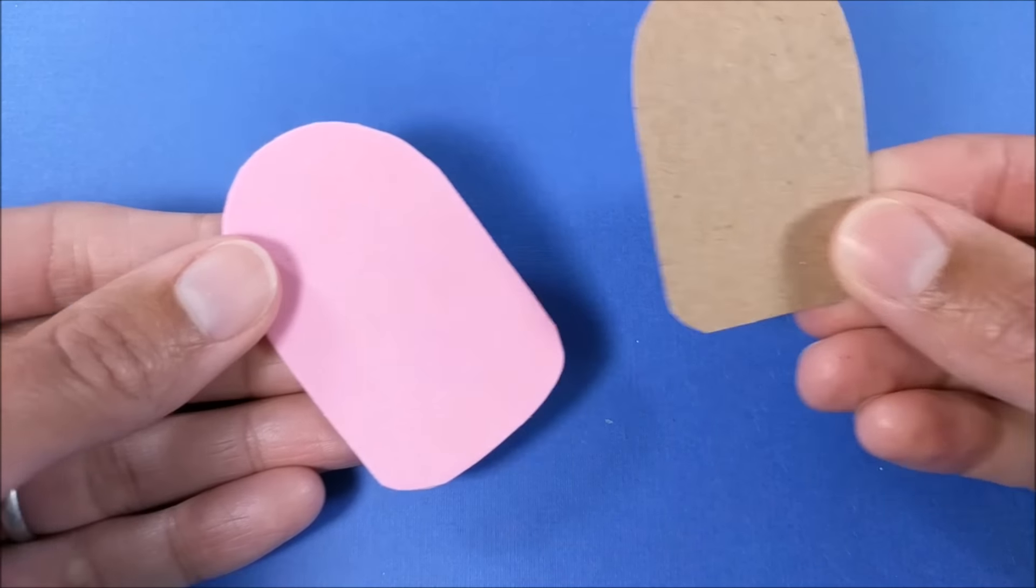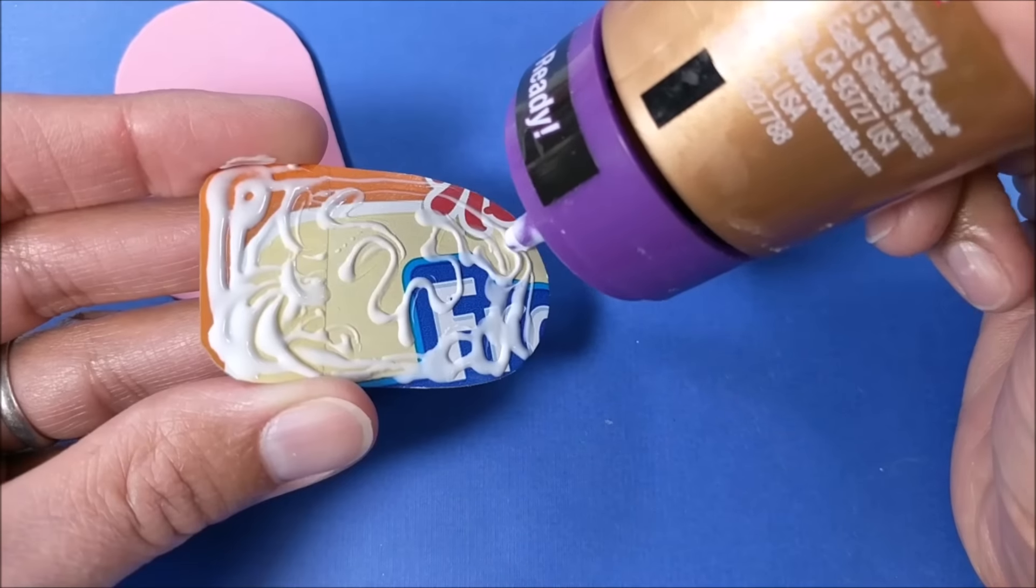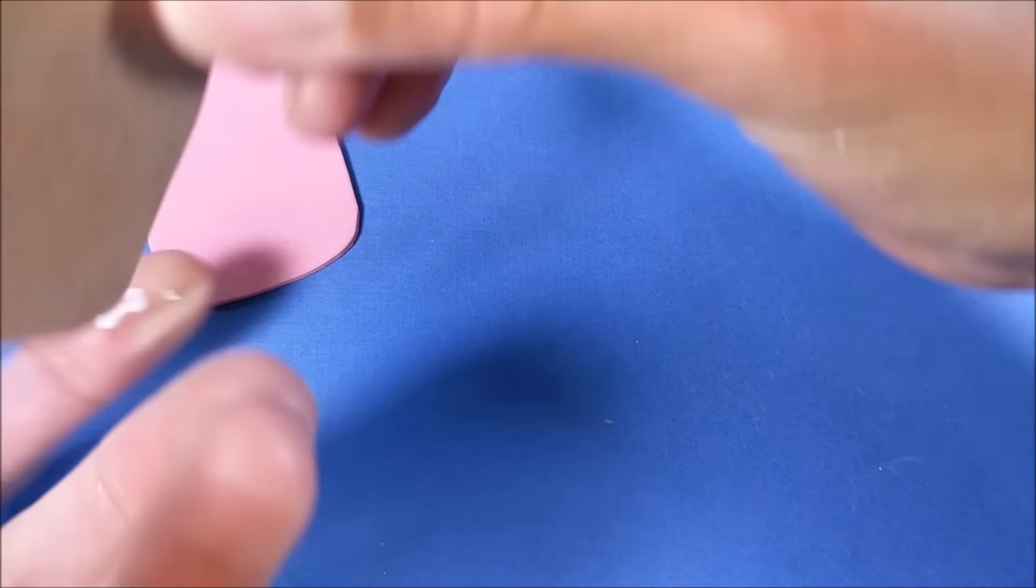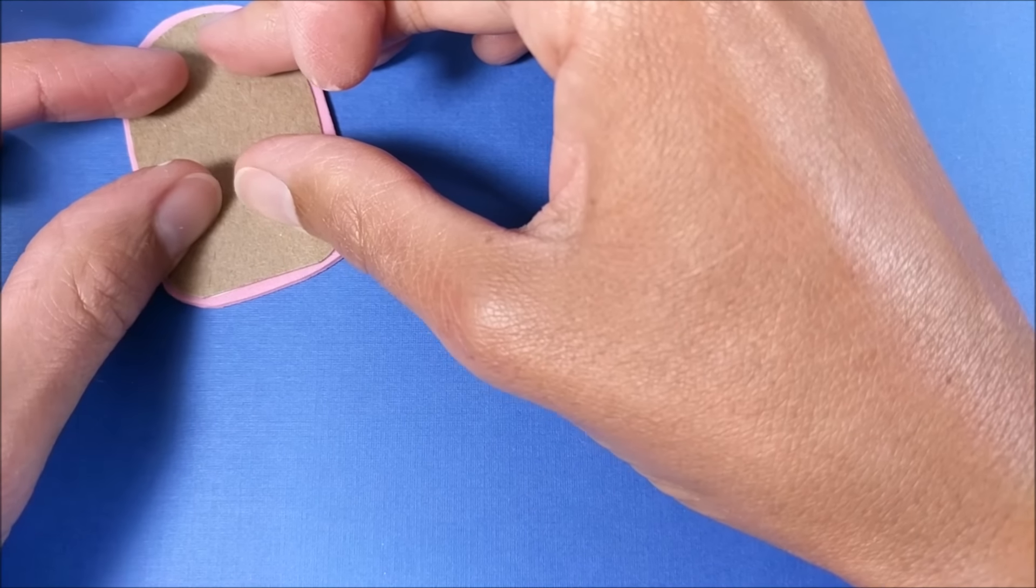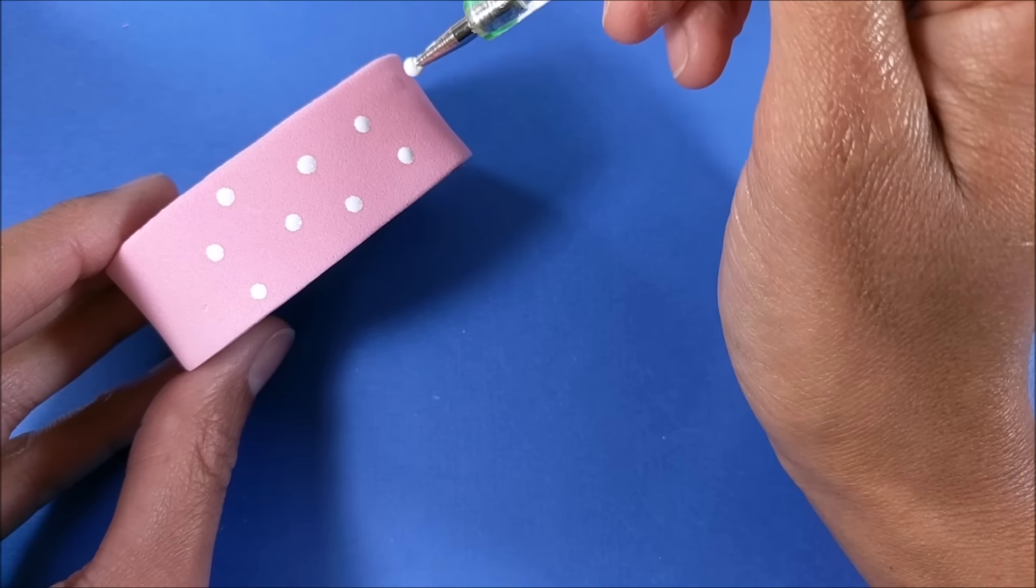Then I cut out thin cardboard from packaging which is slightly narrower than my craft foam, just so you won't really see it from the bottom and glue. Then just adding polka dots using glossy acrylic paint.